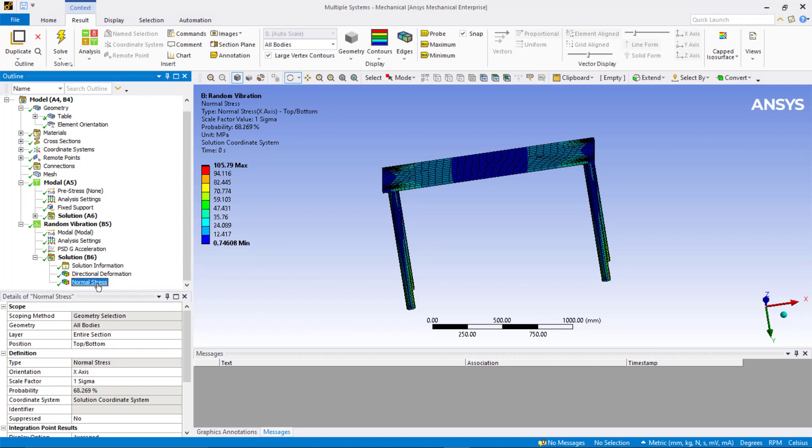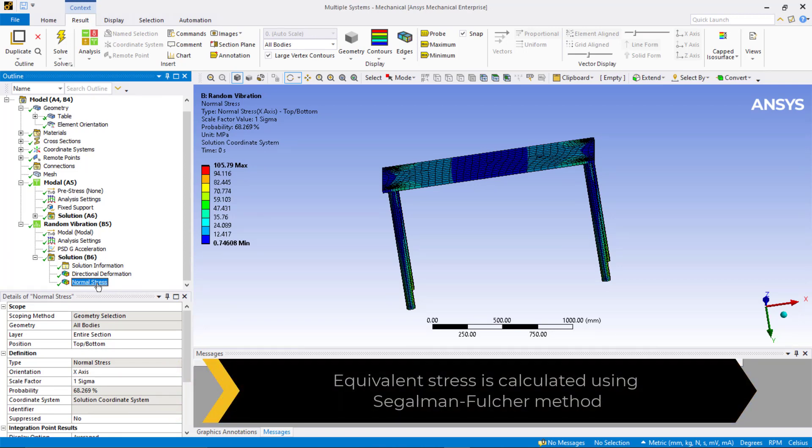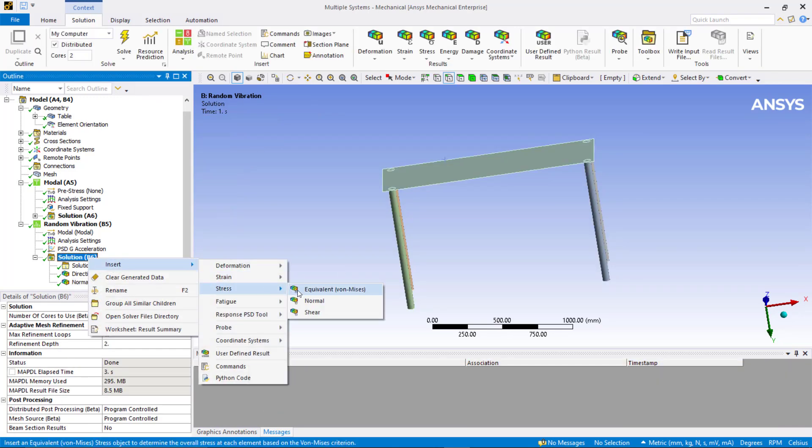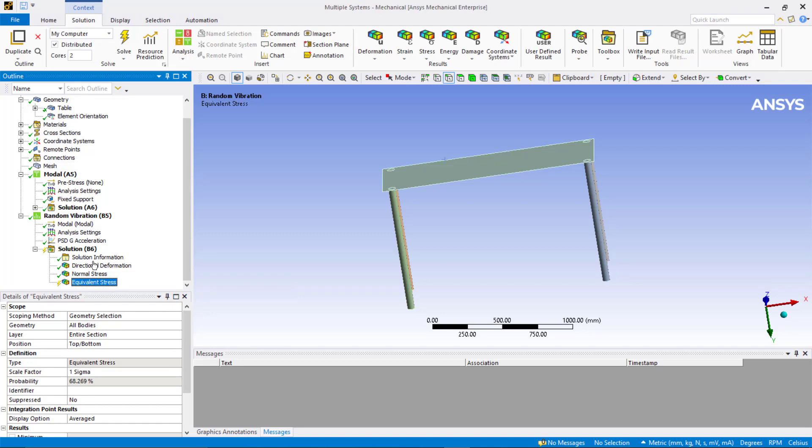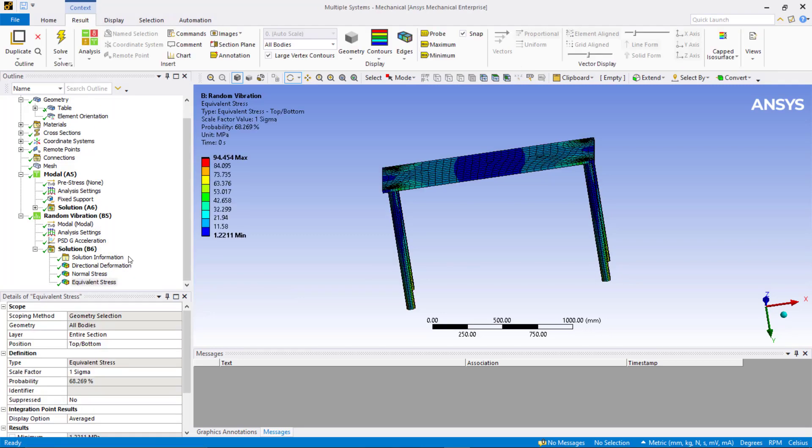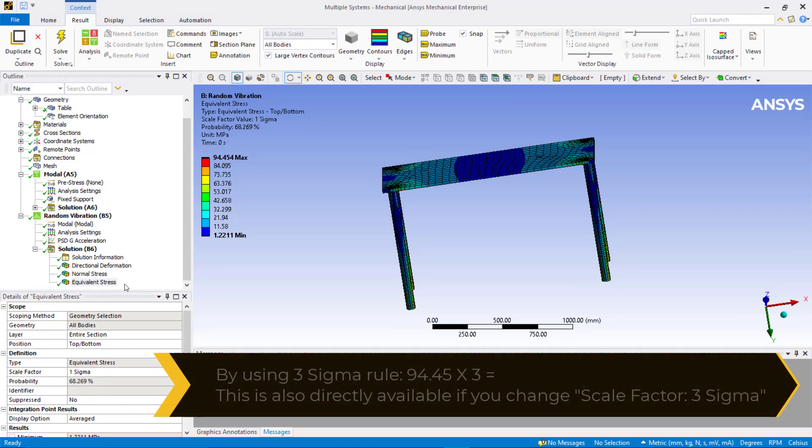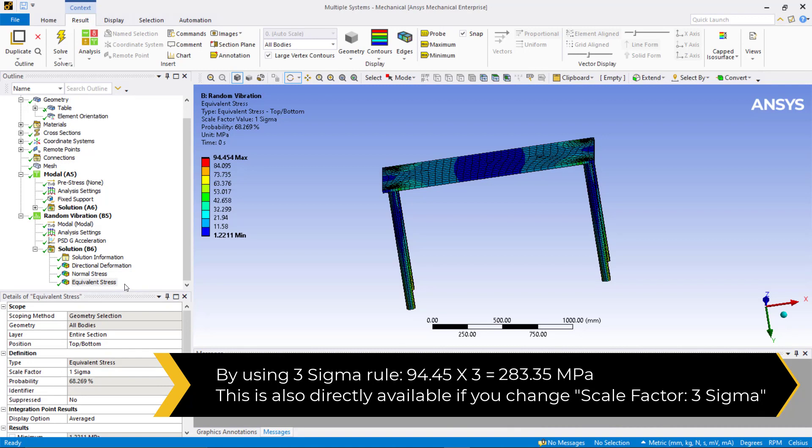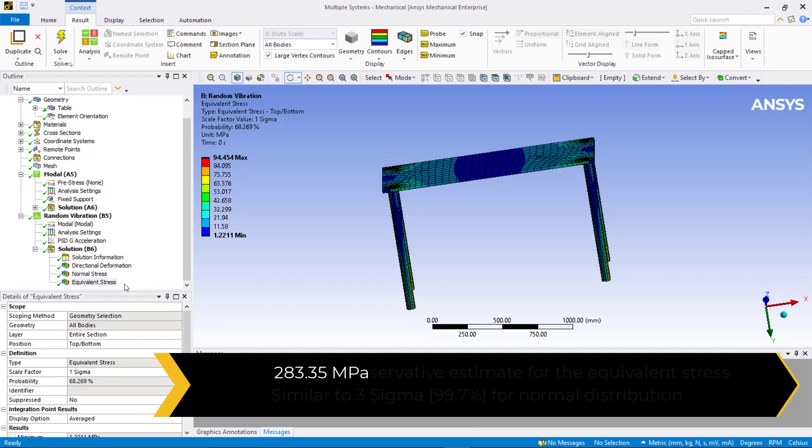Recall from the lecture that the equivalent stress in random vibration analysis is calculated using a special algorithm called Segalman-Fulcher method. Right-click on solution, insert stress and equivalent stress. Evaluate all results. We can see the value of equivalent stress obtained is 94.45 MPa which when multiplied by 3 gives us 283.35 MPa. This value gives us a conservative estimation of the upper bound of the equivalent stress value.